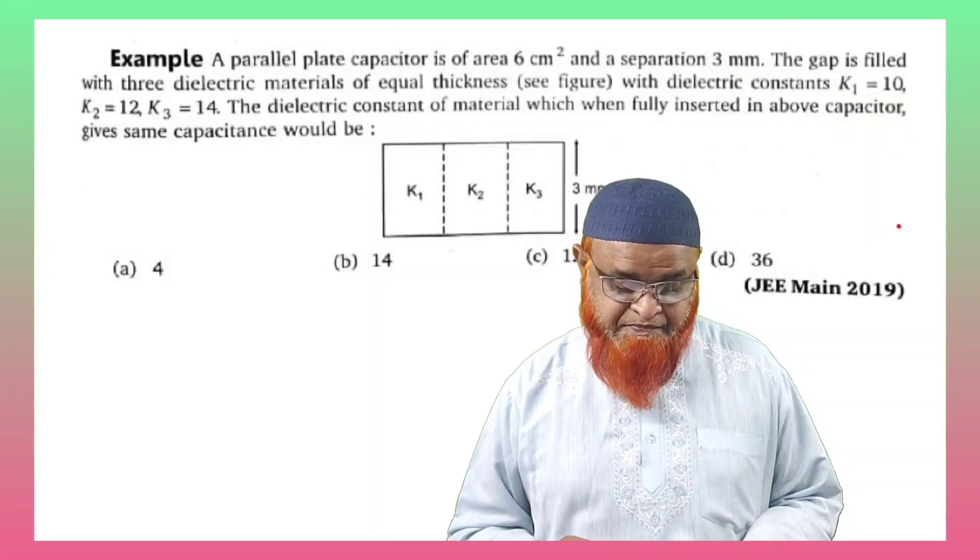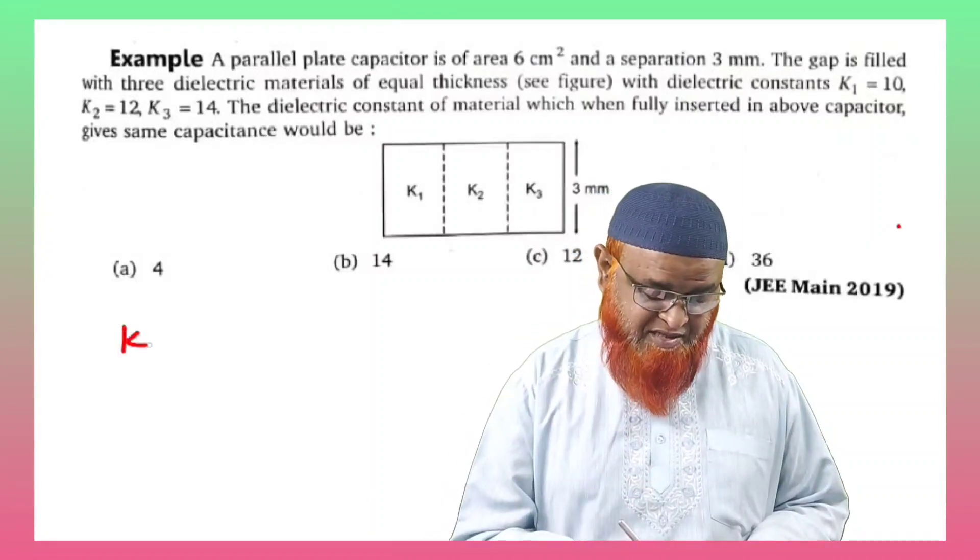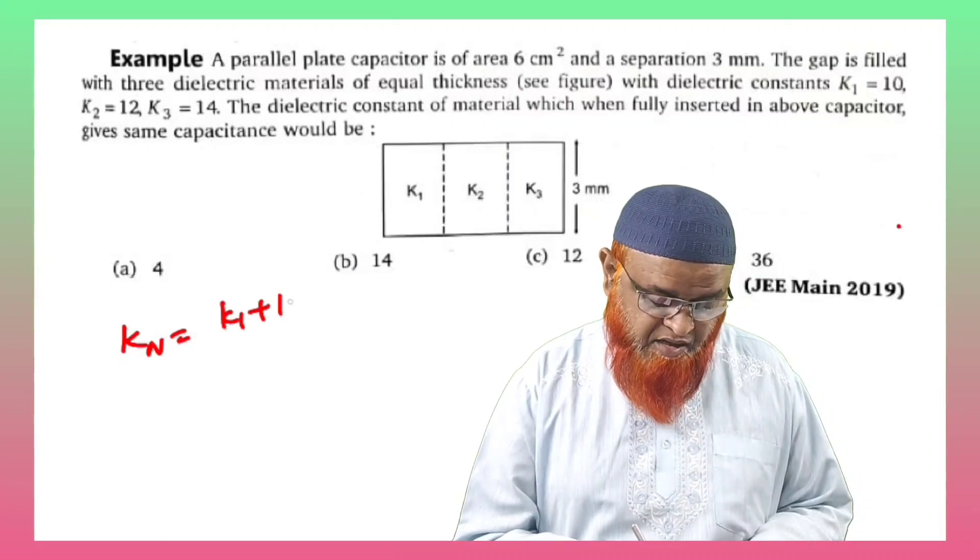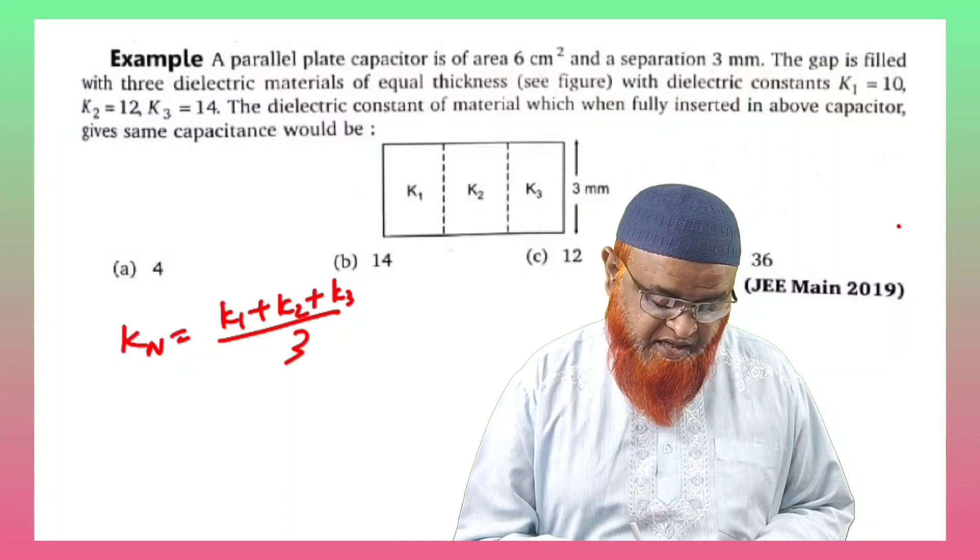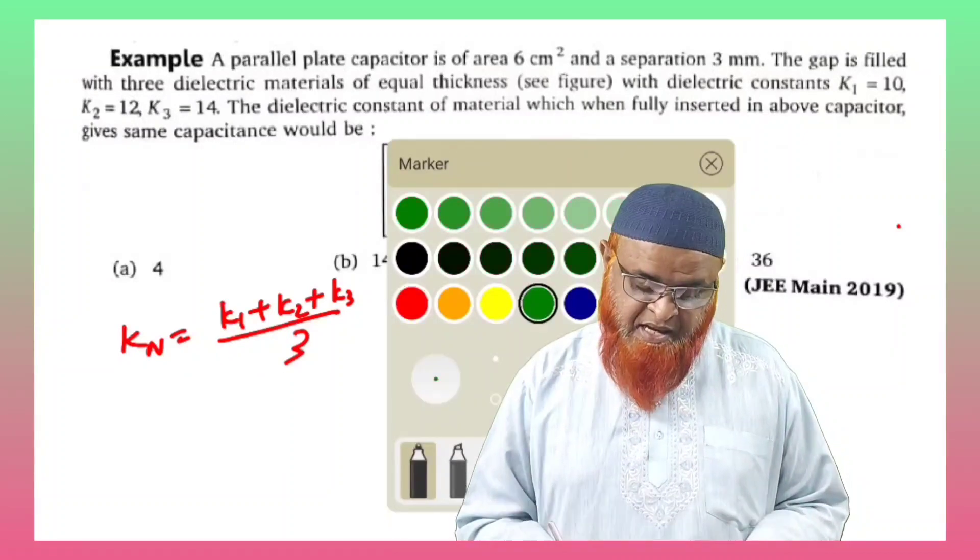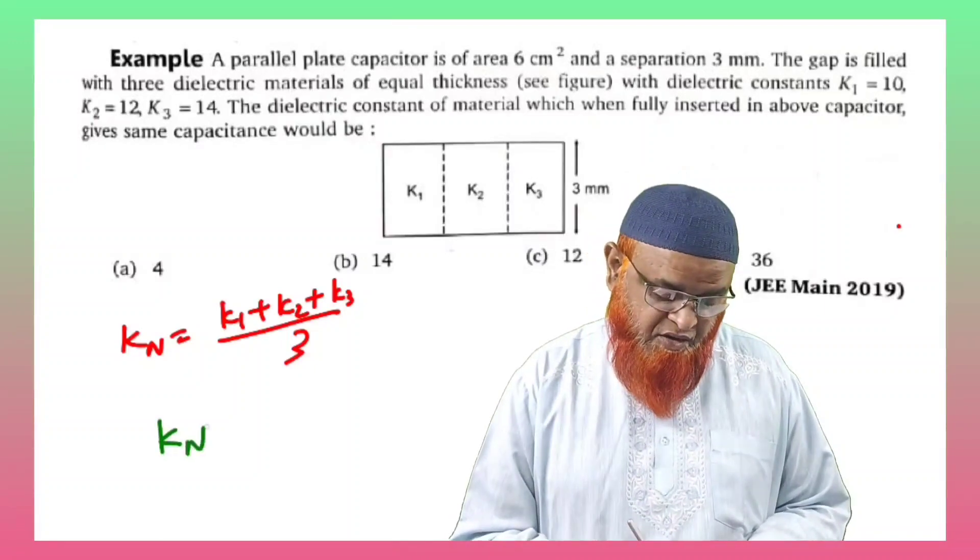You all know about this. So what are we going to do? Just find the average of these three. That is, k_net is nothing but the average: k1 plus k2 plus k3 divided by 3. That's it, you got the answer.